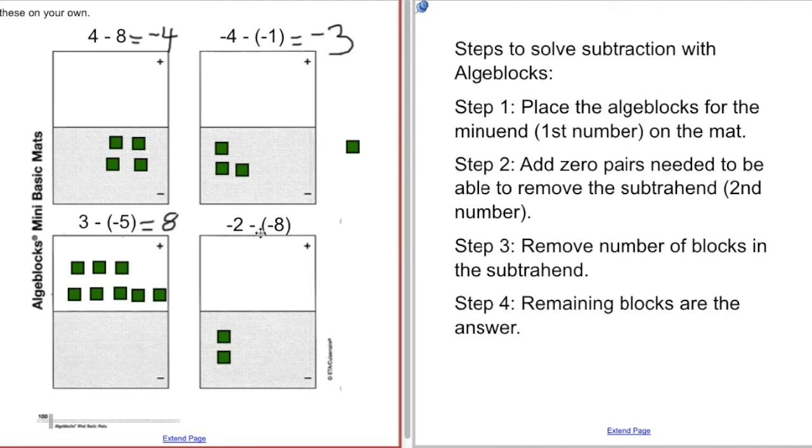Okay, next we have negative 2 minus negative 8. Again, I don't have the negative 8 to take away, so I need to add zero pairs. Okay, now that I have enough zero pairs to let me have my 8 down here, I can take away my 8. And that's going to leave me with positive 6. So negative 2 minus negative 8 equals 6. So I use these steps to solve these problems. And that's how we can do it with the algebra blocks. If you have any questions, feel free to ask or do the extra problems.